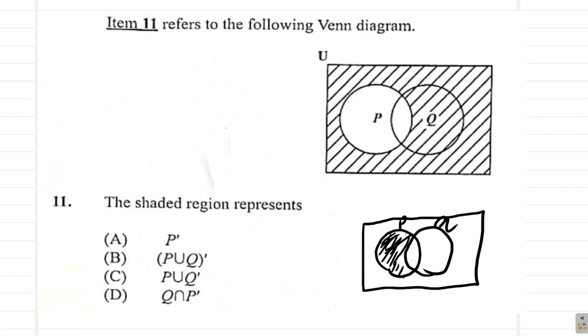So here, this would be P union Q complement. Because Q complement would be outside of Q. So here, P would be outside of P, so this is what would be shaded. So certainly not C.